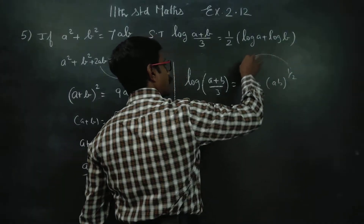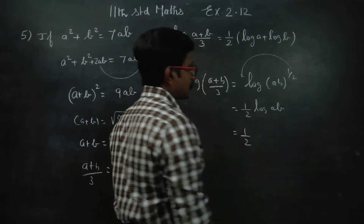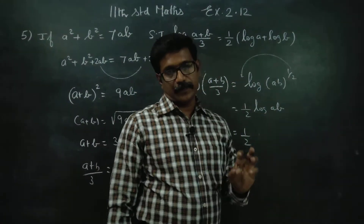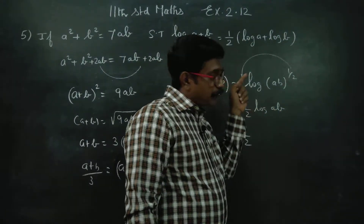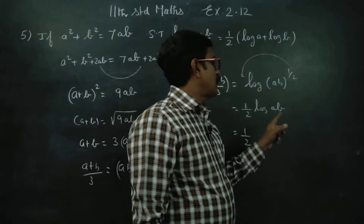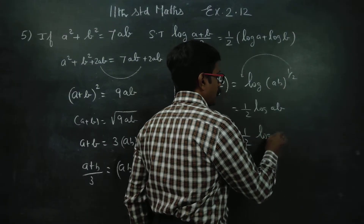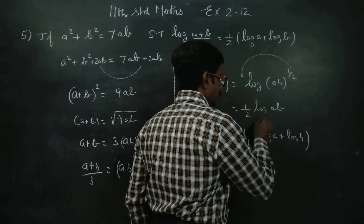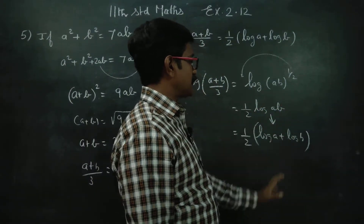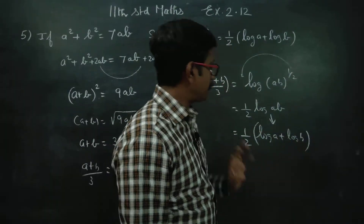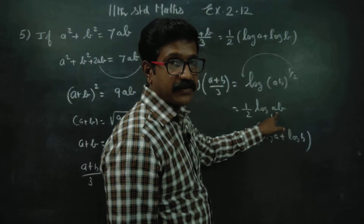Applying the power rule: 1 by 2 log ab. Then applying the logarithm product rule — if two numbers are under multiplication, log(a into b) is written as log a plus log b. So log ab equals log a plus log b.